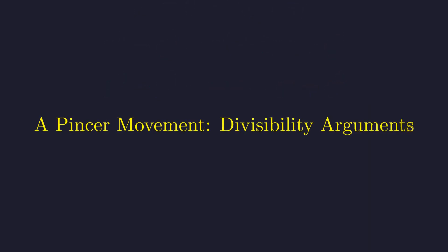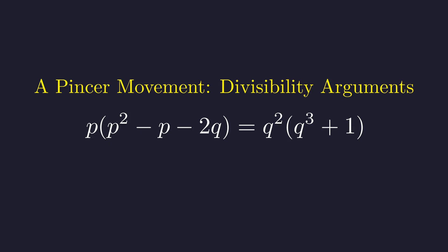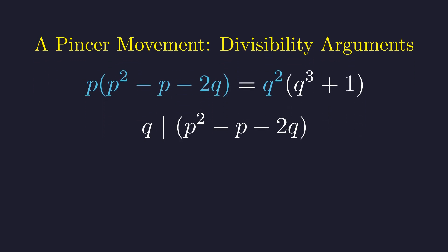This factored form allows us to use divisibility arguments to constrain the possibilities for p and q. Let's analyze this equation from two different perspectives. First, the prime q must divide the right-hand side, and therefore must also divide the left-hand side. As p and q are distinct primes, q cannot divide p. This implies q must divide the other factor, the quantity p squared minus p minus 2q. Since q clearly divides the term negative 2q and q divides the entire expression, it must also divide the remaining part of the expression.